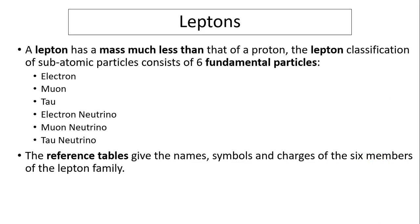Leptons. Remember, leptons do not form any strong nuclear interaction with any other particles. Leptons have a mass much smaller than that of quarks. Lepton classification of subatomic particles consists of six fundamental particles. The most famous lepton is electron. Now we have muon and tau. Muon and tau are a little more massive than electron. For each one, we also have a neutrino. We have electron neutrino, muon neutrino, and tau neutrino. These neutrinos also have a little mass, very small amount of mass, but they don't have charge. Unlike electron, muon and tau, they all have a negative charge, negative one elementary charge. Reference tables give the names, symbols, and charges for the six members of the lepton family.